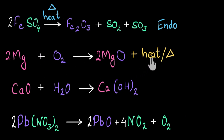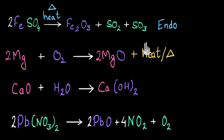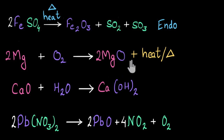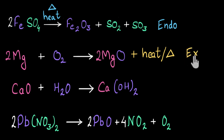In the next reaction, I can see that plus heat or plus delta is written on the product side. This means that heat is being evolved along with the product. A reaction in which heat is evolved or given out is called an exothermic reaction — so this is going to be an exothermic reaction.